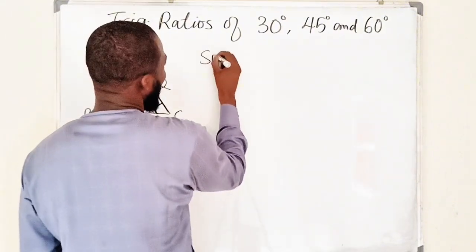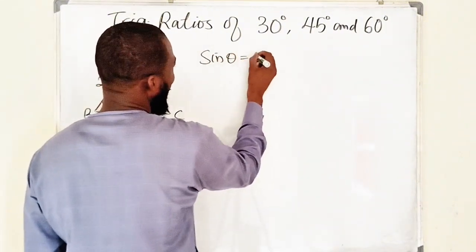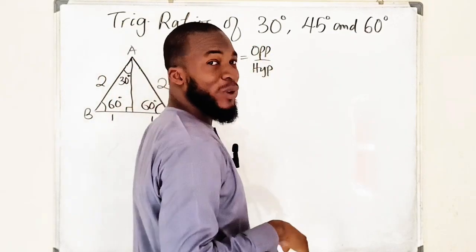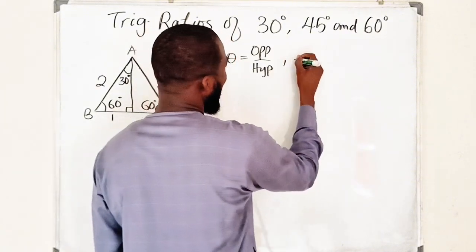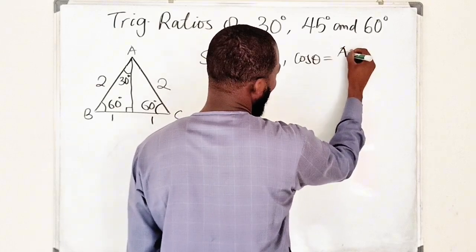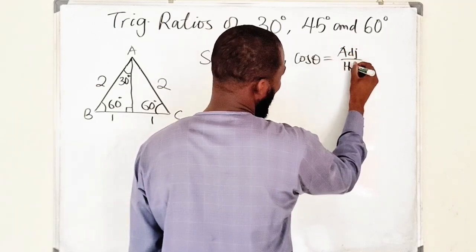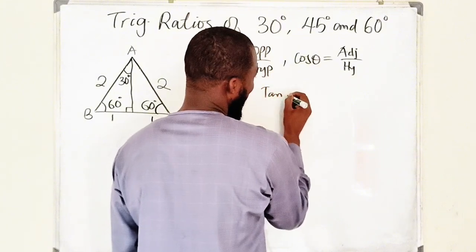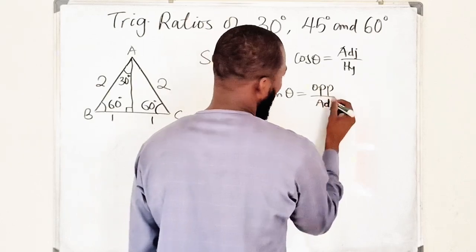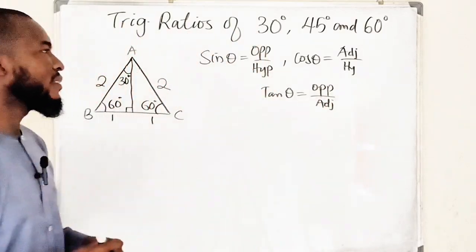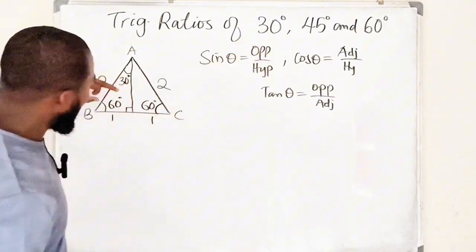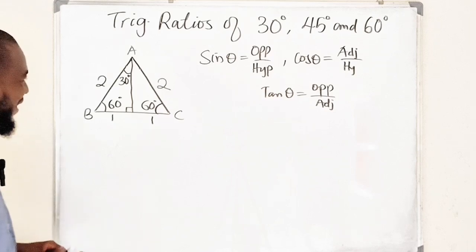Remember: sine theta equals opposite divided by hypotenuse. Cosine of the same angle will be adjacent divided by hypotenuse. And lastly, tangent will be opposite divided by the adjacent — or you can take sine divided by cosine for tangent, it's all the same. So let's start with 30 degrees, because you can see we have 30 degrees here.